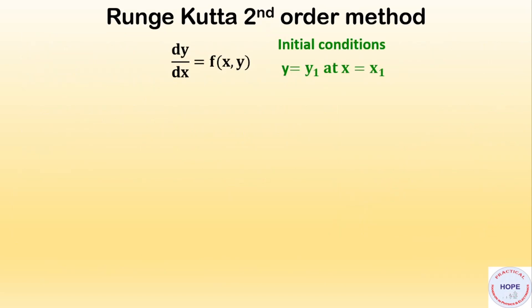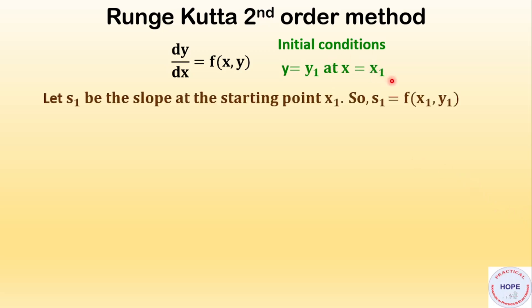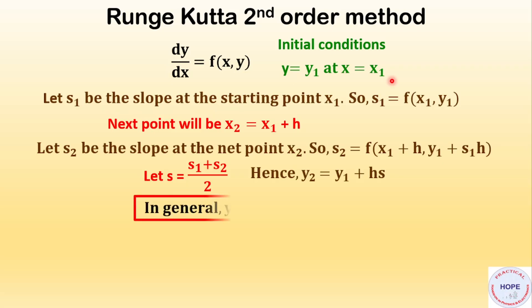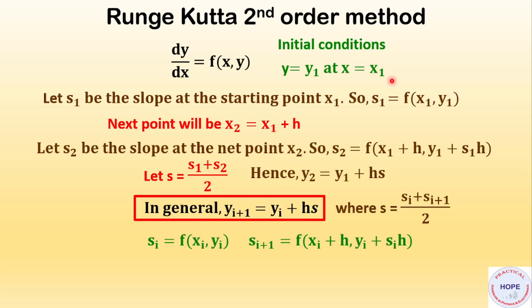Let's discuss the Runge-Kutta second-order method briefly. Say we have a differential equation with given initial conditions. Let s1 be the slope at the starting point x1, so s1 is f(...). The next point x2 will be x1 plus h, where h is the step size. Then s2 is the slope at x2, given by f(x1+h, y1+s1·h). We set s = (s1+s2)/2, and y2 = y1 + h·s. In general, y_{i+1} = y_i + h·s, where s_i and s_{i+1} are calculated accordingly.